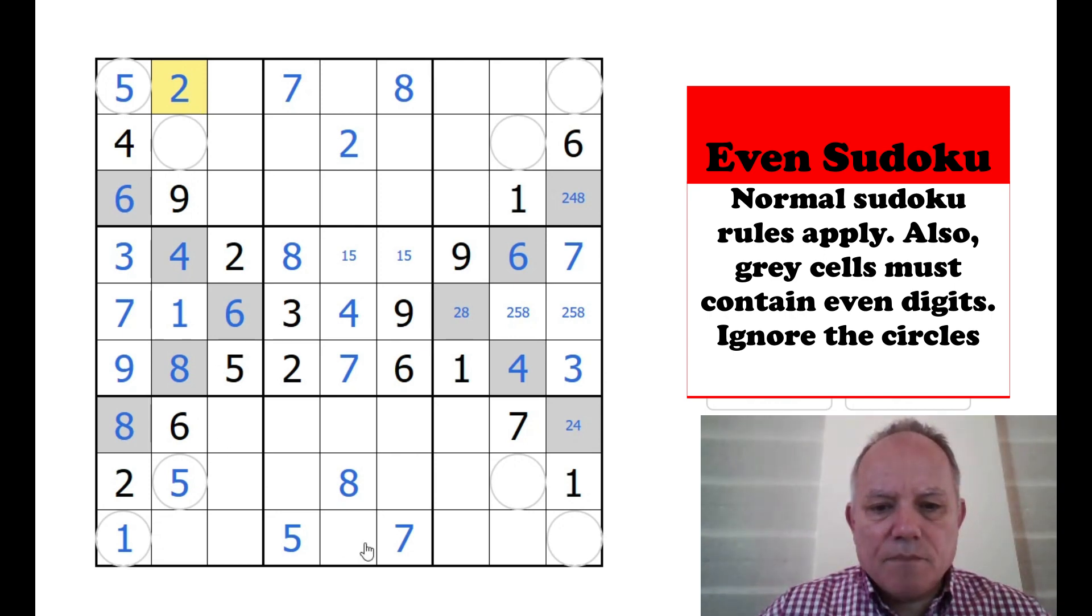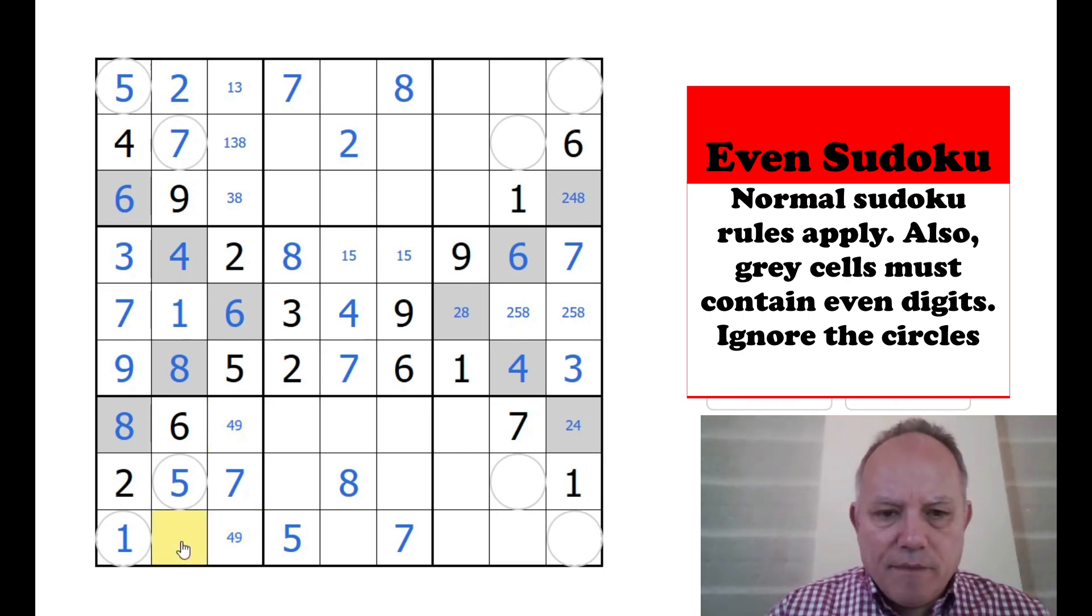And in this box, now look sevens looking at all of these cells. So obviously seven in the corner box has to be there. That's great for this box. So just keep working together. Every time you find a digit, look in another direction from that digit to see what can break loose. So this is a one, three, eight triple. Top one can't be eight. That one can't be one. This is a four, nine pair. And this is the remaining three.